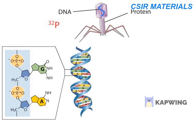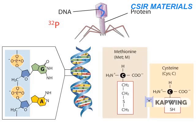They used P32 to label DNA. The two strands of DNA have a sugar-phosphate backbone that contains phosphorus atoms. Phosphorus is not present in most proteins. They used S35 to label proteins. Proteins contain some sulfur because sulfur is found in the amino acids cysteine and methionine. Sulfur is not present in DNA.